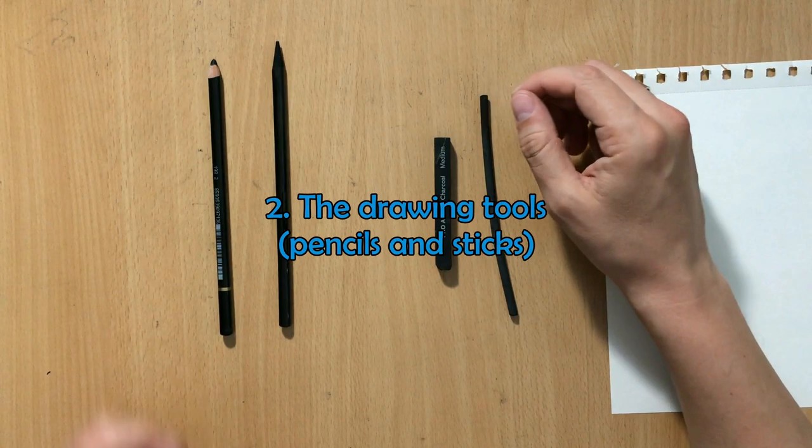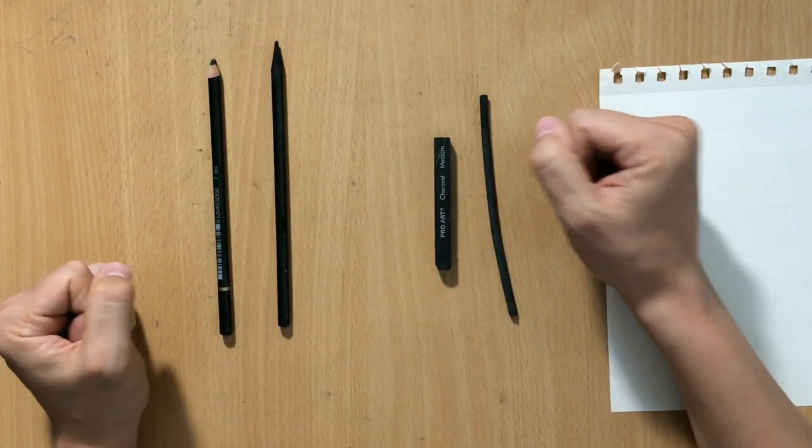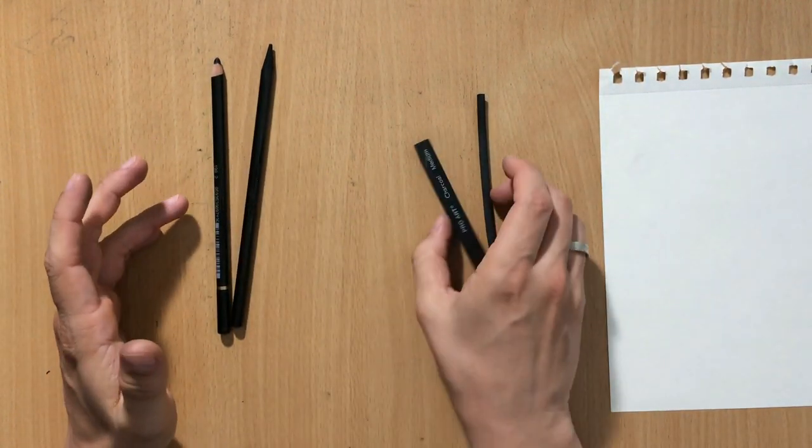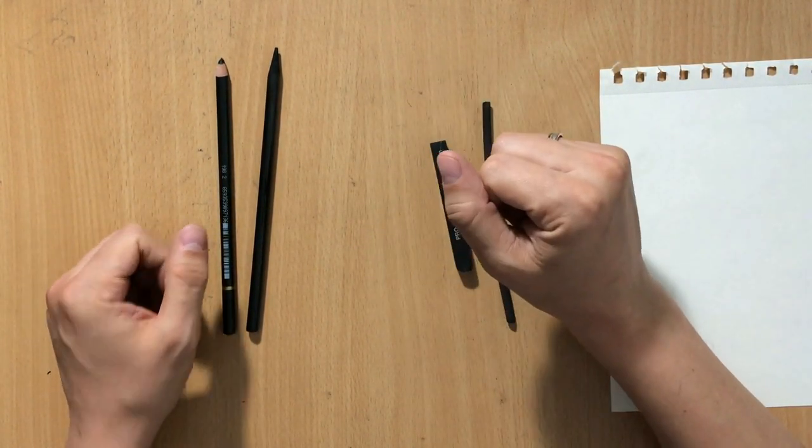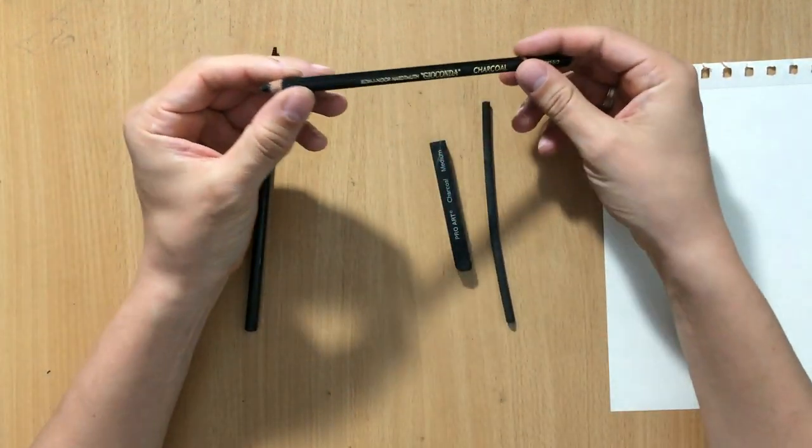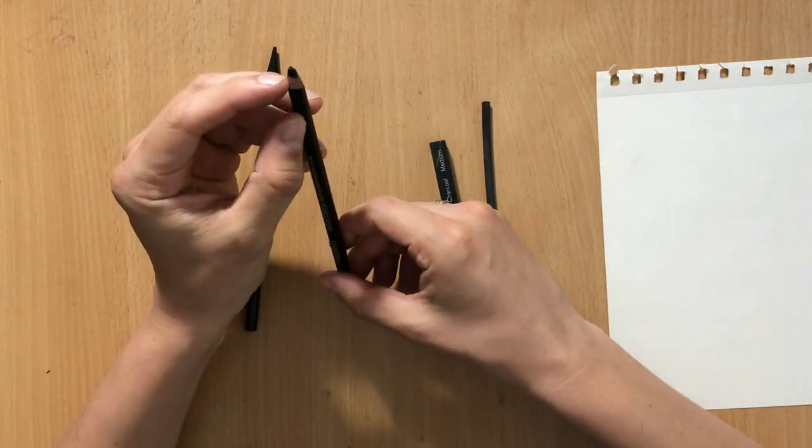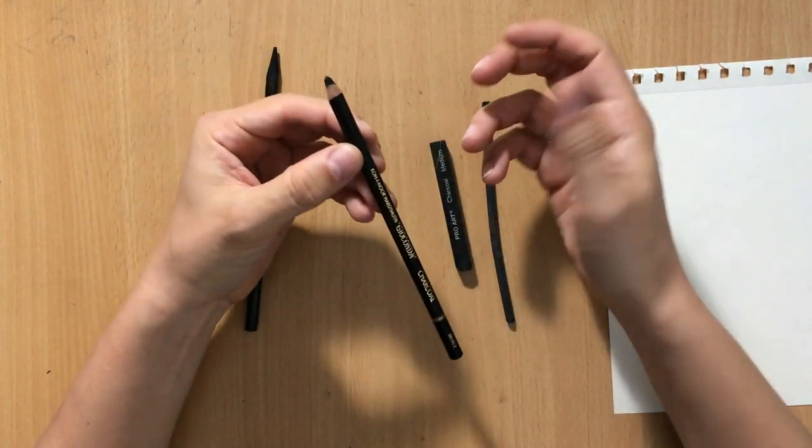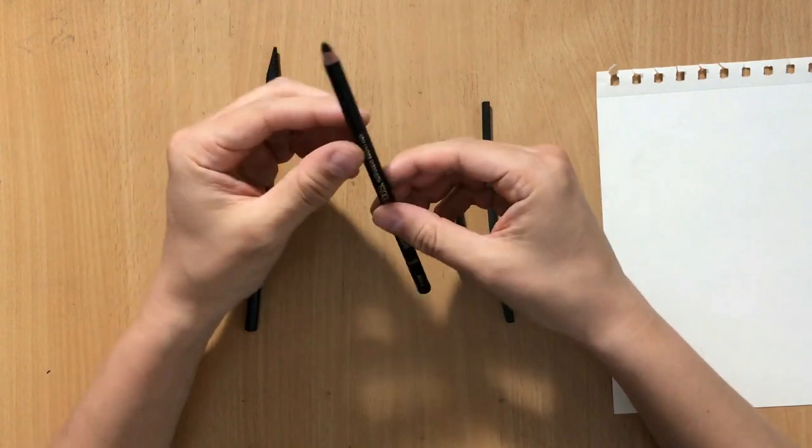The second category is drawing tools. This is where things get more complicated because we have pencils and sticks. Charcoal pencils are very similar to graphite pencils—charcoal inside a wood casing. They can be sharpened just like a regular pencil. Instead of graphite lead, we have charcoal.